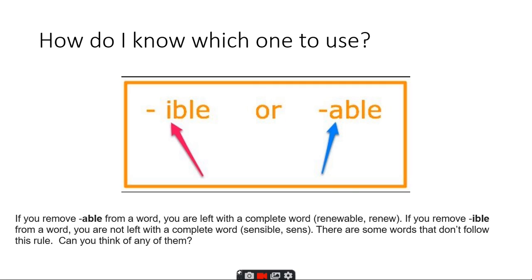If you remove -ible from a word, you're not left with a complete word. For example, sensible - if you take off the i-b-l-e, you end up with sens, which is not a word and not to be confused with the word sense.